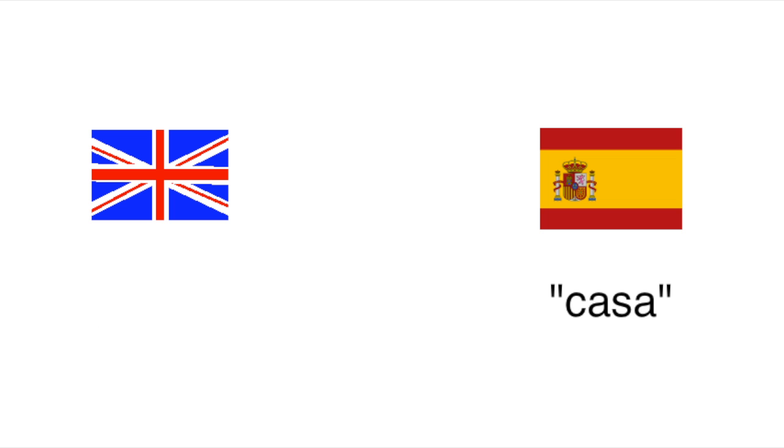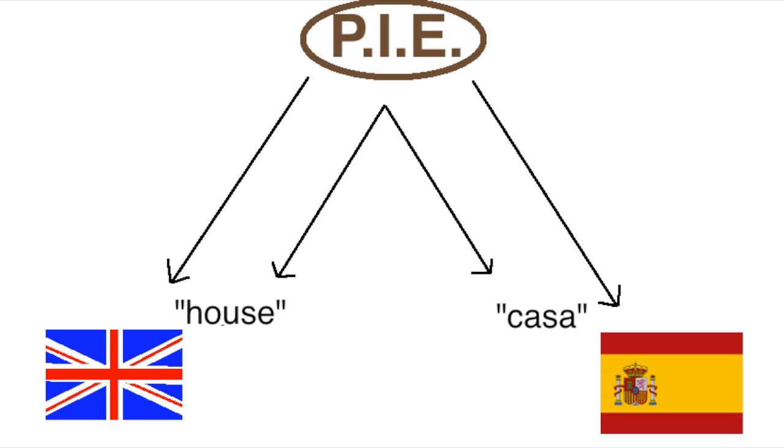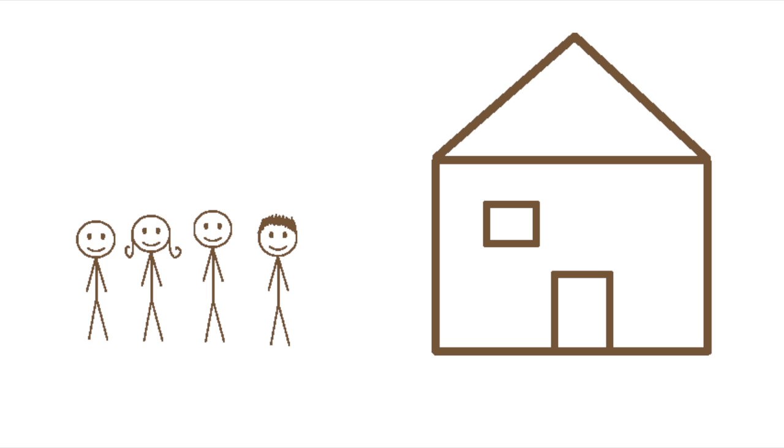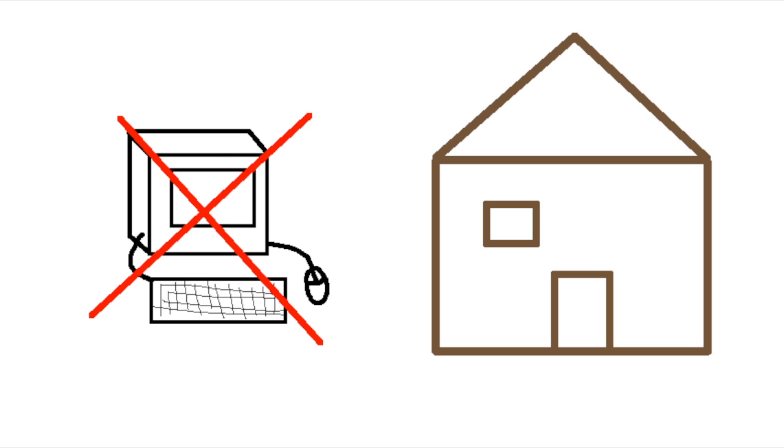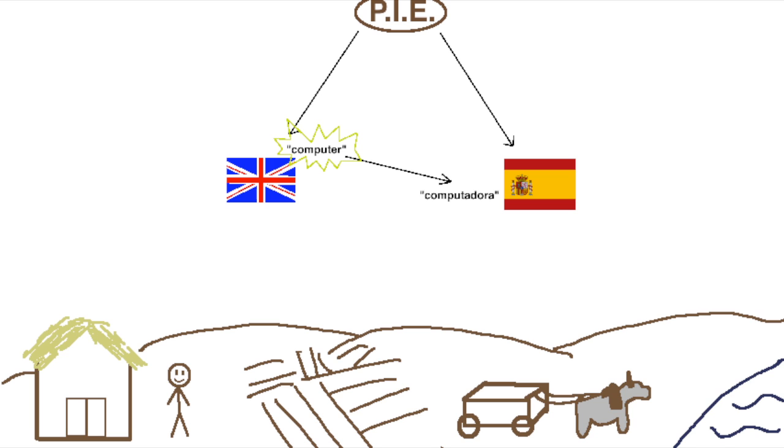Meanwhile, the Spanish word casa corresponds to the English word house, suggesting that the Proto-Indo-Europeans probably did have a word for house, and therefore probably had houses. Now, those two things are pretty obvious, but we can actually use similar strategies to figure out a lot about Proto-Indo-European culture.